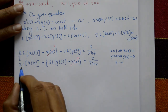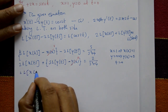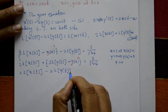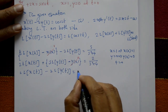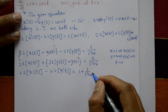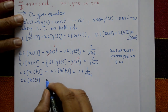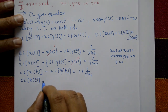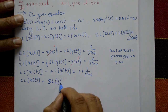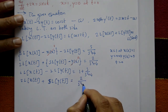After substituting, the simplified system is: s·L{x(t)} minus 2·L{y(t)} equals 1 plus s/(s²+4), and 2·L{x(t)} plus s·L{y(t)} equals 2/(s²+4).